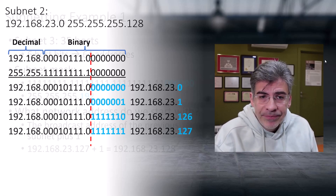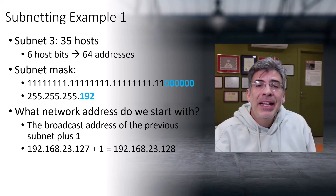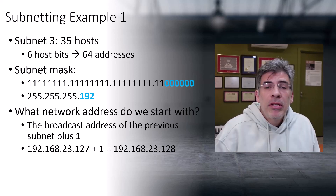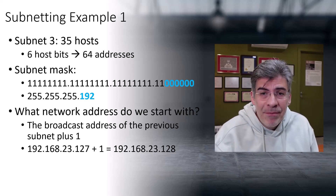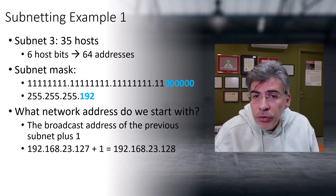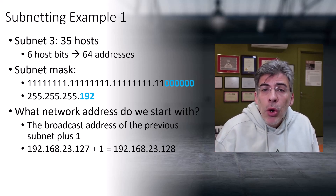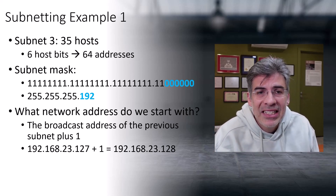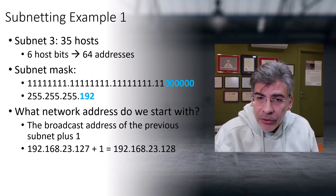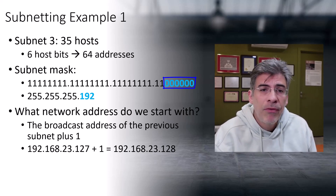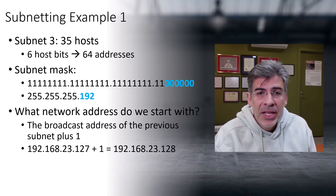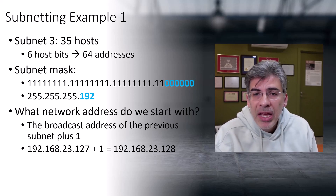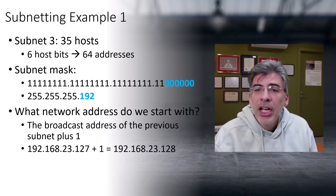For subnet number three, we want to accommodate 35 hosts, so we use six bits for the host portion, giving us up to 64 addresses. We couldn't use just five bits because that would only give us 32 hosts, which is less than the 35 we need, so we use the next size up. Six host bits gives a subnet mask of 255.255.255.192. The network address is the broadcast address of the previous subnet plus one: 192.168.23.128.